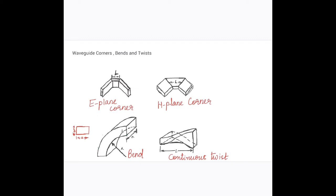So basically these are the various types of waveguide bends, corners and twists. They are used to normally change the direction.